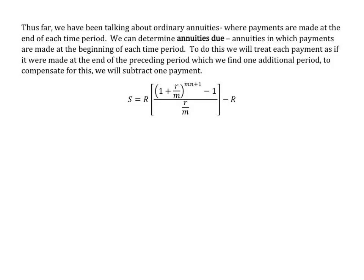Thus far we've been talking about ordinary annuities, where payments are made at the end of each time period. We can also work with annuities due, which are annuities in which we make the payment at the beginning of each time period. To do this, we treat each payment as if it were made at the end of the preceding period, giving us one additional period. To compensate, we subtract one payment at the end.